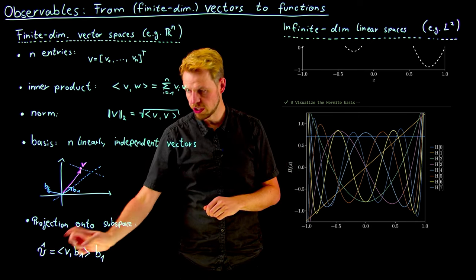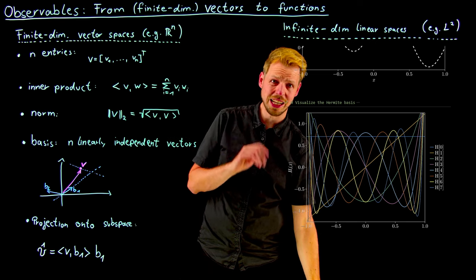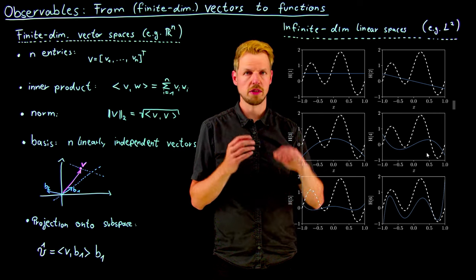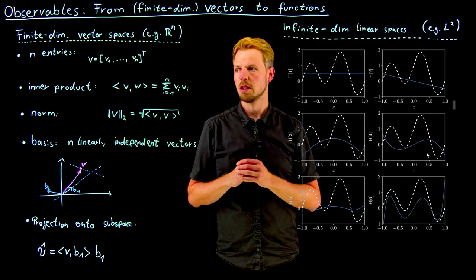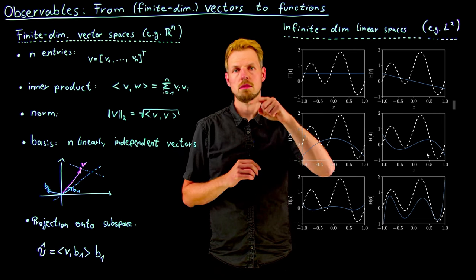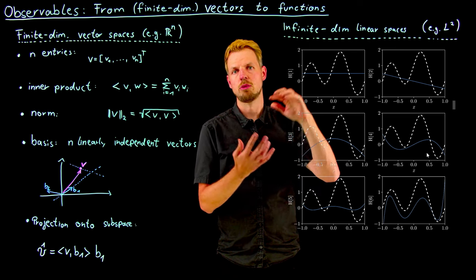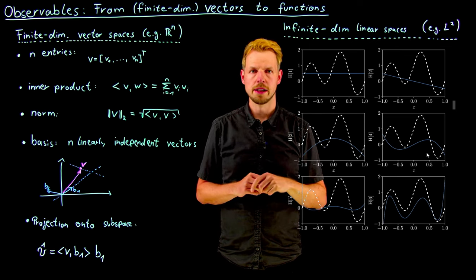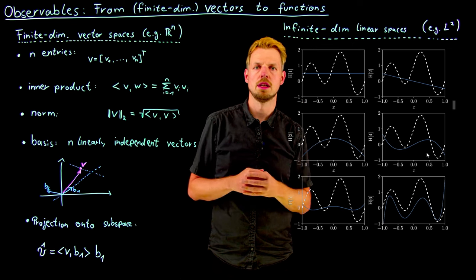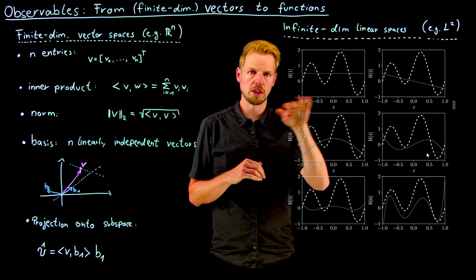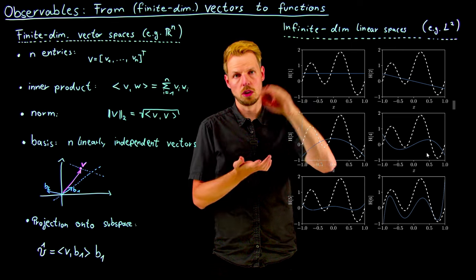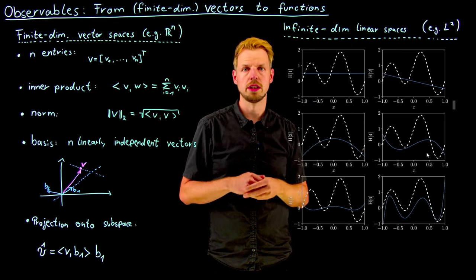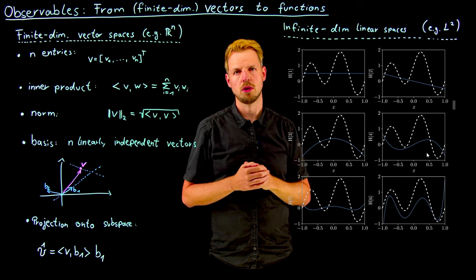What you can study is how much information of this original dashed line is contained in this specific basis element. Here are the first six Hermite functions and the projection or best approximation of the white function by each basis function. The constant function gives you the mean, then the linear function puts a line through the plot. Not very helpful on their own.